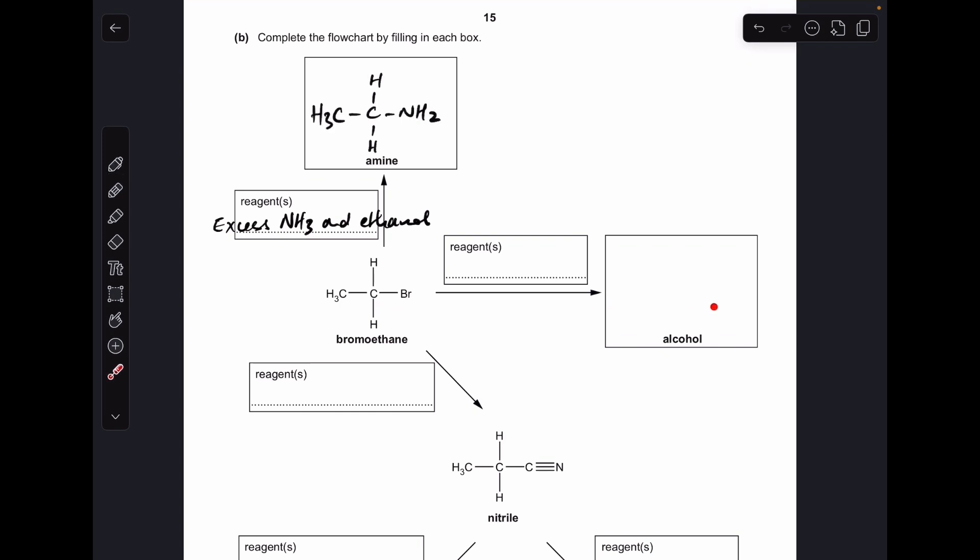We'll look at this reaction here, bromoethane to alcohol. To turn a haloalkane into an alcohol, you just react it with an alkali essentially—sodium hydroxide, potassium hydroxide, or just hydroxide ions. The alcohol formed is going to be that one there.